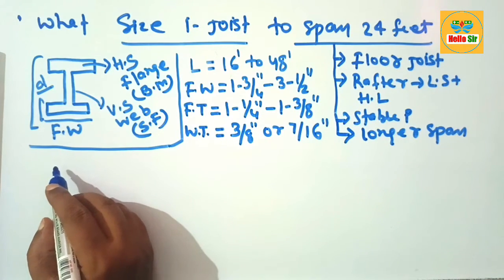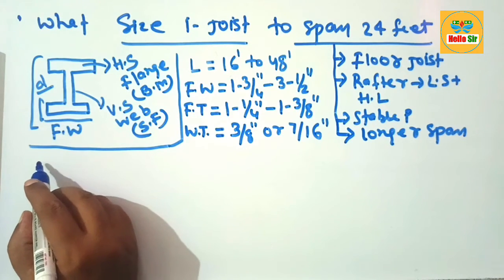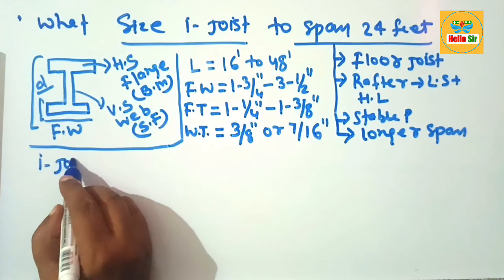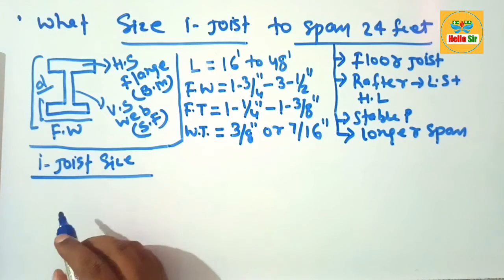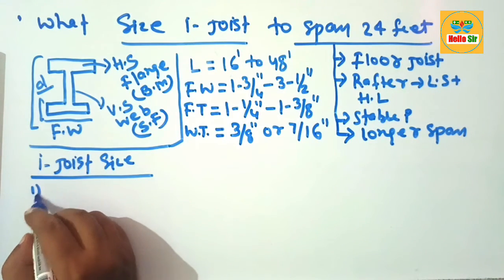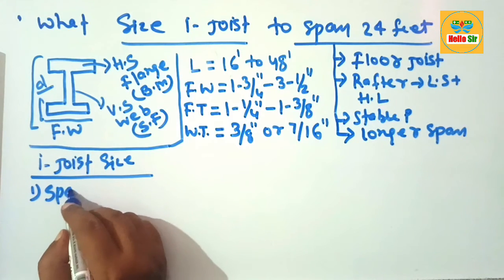What are the factors that determine the I-joist size? The first factor is spacing between the joists, which should be 12 inches on center or 16 inches on center.